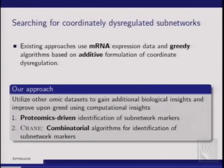In the context of subnetwork identification, a greedy algorithm simply searches the entire global network by seeding from a single gene, then searching around that gene, adding genes that increase the objective function — here, coordinate dysregulation — as much as possible. We don't like greedy algorithms here because by definition of the problem we are looking for genes that together differentiate phenotype and control, so we have to have something more algorithmically involved. I will talk about two approaches.